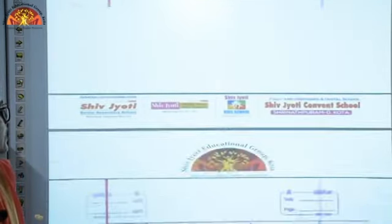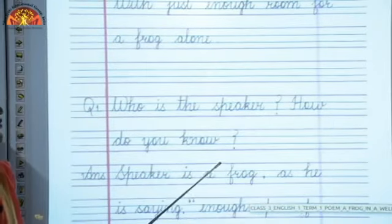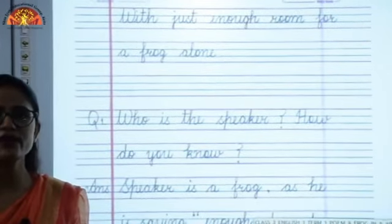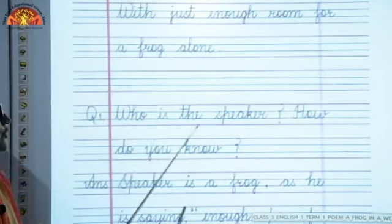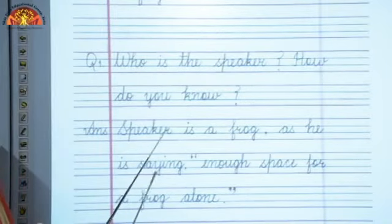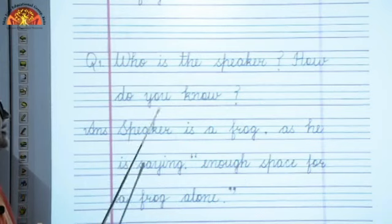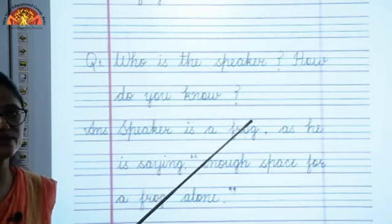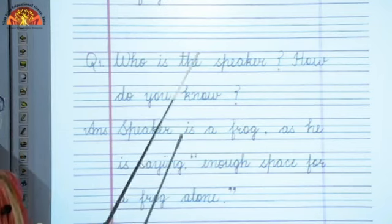You have to answer a few questions. With just enough room for a frog alone — there is space only for a frog to live in there. Who is the speaker? How do you know? The speaker is a frog. As he is saying there is enough space for a frog alone — he is himself saying that, therefore we can say that the speaker is a frog.